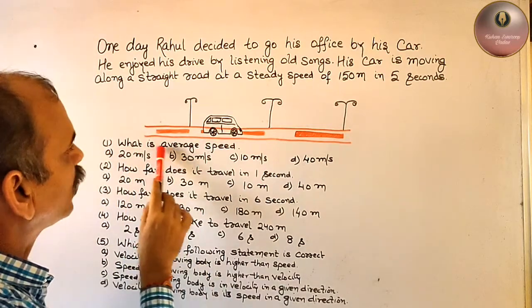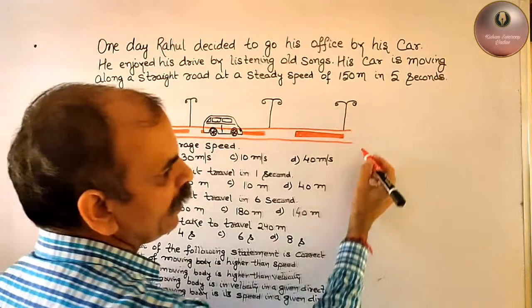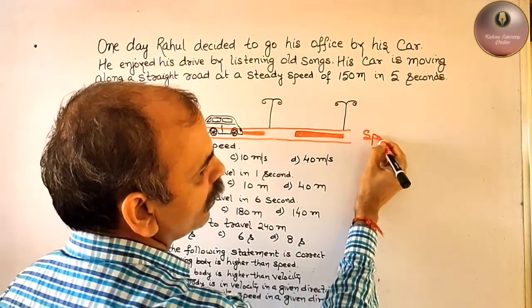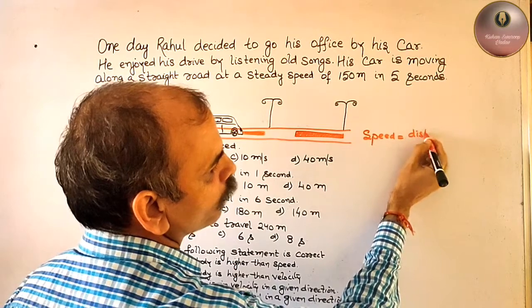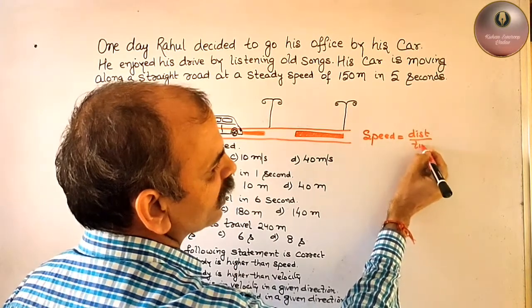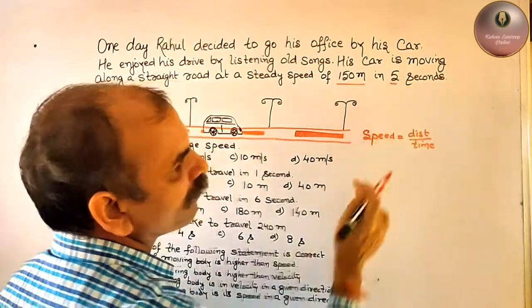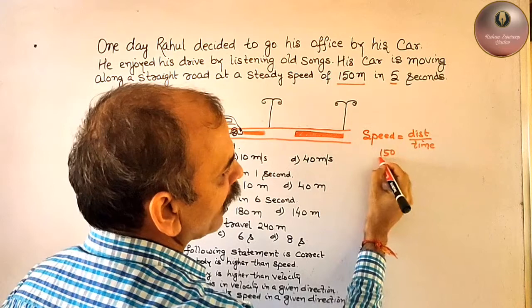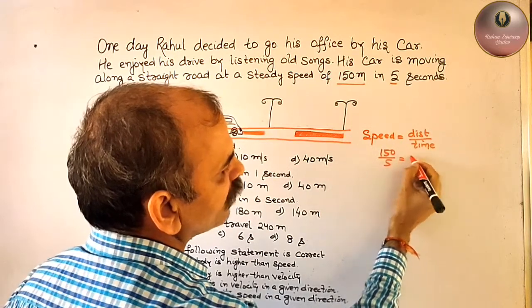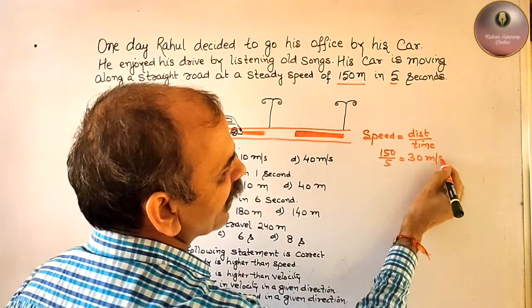What is the average speed? Speed is equal to distance by time. Distance is 150 meters and time given 5 seconds. We can say 150 by 5 that is equal to 30. 30 meters per second is the speed.